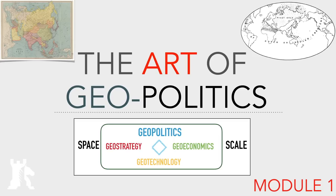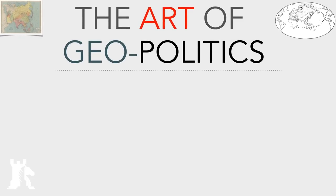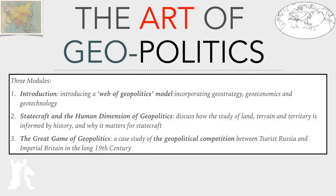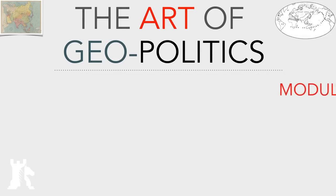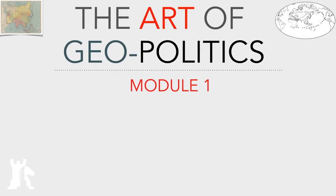In the Art of Geopolitics series, we will explore what geopolitics is as a practice and then see how it can be operationalized as a tool for statecraft. In the series we will go through a set of three modules, beginning with an introduction of a model for geopolitical analysis, then linking it with geopolitics as a practice or guide for statecraft, and finally bringing it all together through a case study of the grand strategic competition between Czarist Russia and Great Britain in the 19th century, also known as the Great Game.